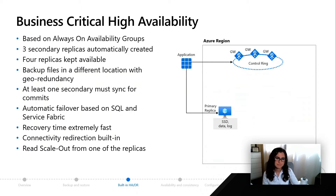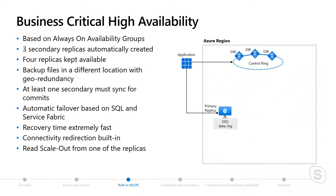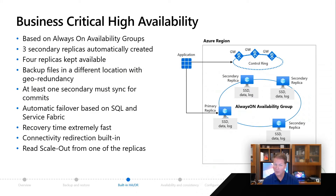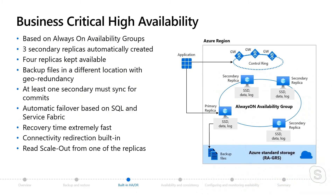Business critical is based on Always On availability group technology. We take advantage of the fact that data is stored locally on your primary replica, and we automatically create secondary replicas — we'll always keep three replicas available at all times as much as possible. The backup files are in a different location using geo redundancy, just like general purpose, so backups are separate from database files. For commits of your transaction, at least one of these secondaries must be in synchronization with the primary for a commit to succeed, to ensure we can meet the SLA requirements for business critical.